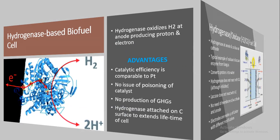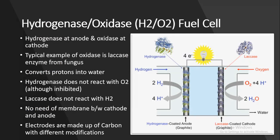The hydrogenase–oxidase biofuel cell is a typical example in which hydrogenase is used at the anode for oxidation of hydrogen, while an oxidase enzyme — for example laccase from fungi — reduces oxygen to make water. Hydrogenase does not react with oxygen (though it may be inhibited) and laccase does not react with hydrogen, so a membrane between cathode and anode may not be needed. The electrodes are made of carbon and may have different modifications.